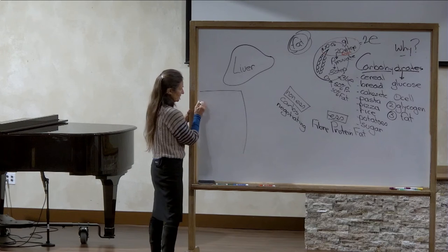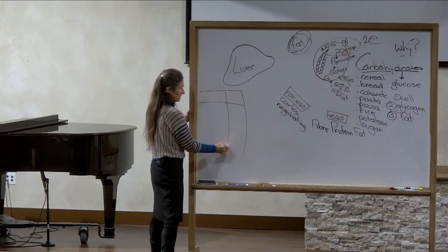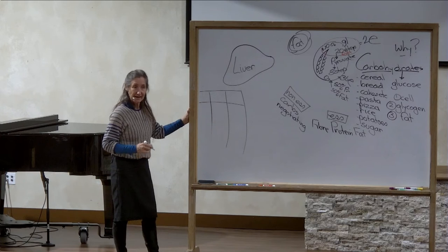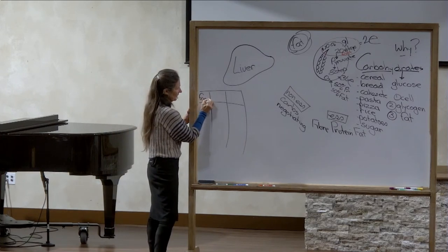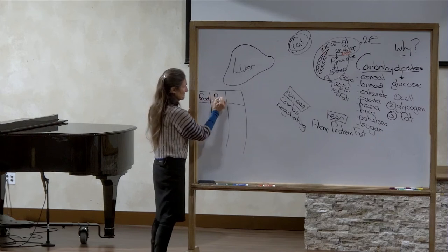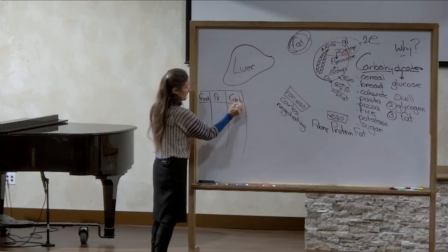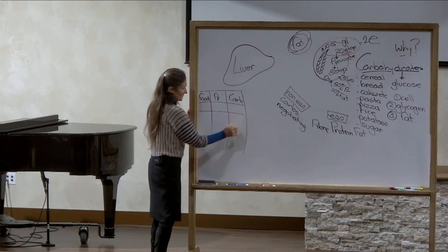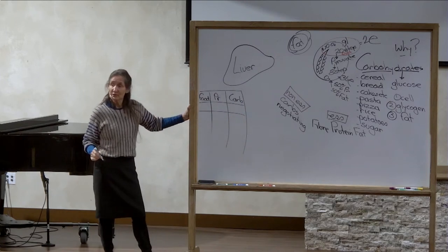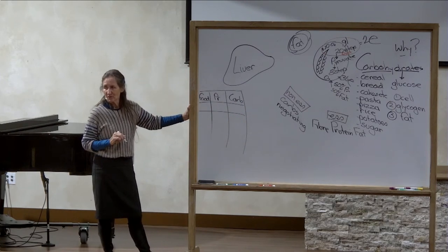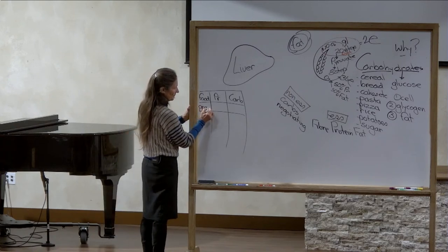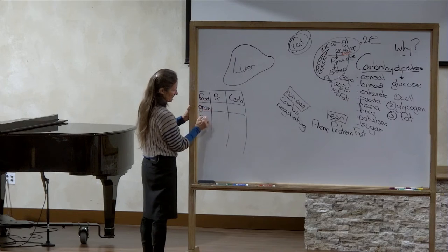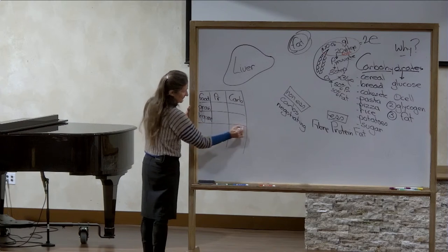We're going to go to Genesis 1:29 where God's telling Adam and Eve what to eat. We're going to look at the food, the protein content and the carbohydrate content. And God said, behold, I have given you every herb-bearing seed. What's a herb-bearing seed? A herb-bearing seed is a grain. A herb-bearing seed is a legume. A herb-bearing seed is a seed.